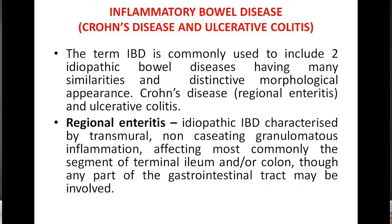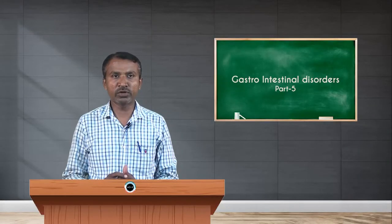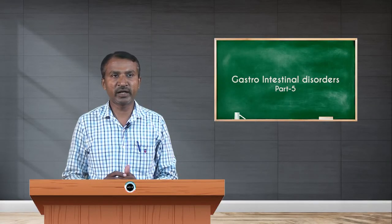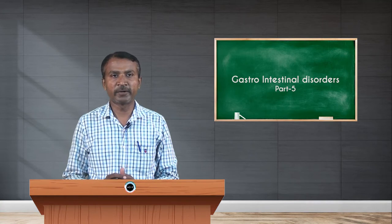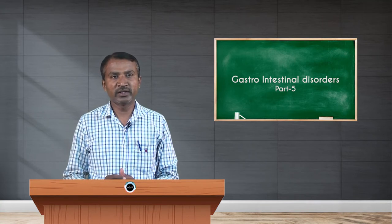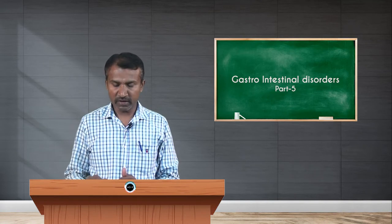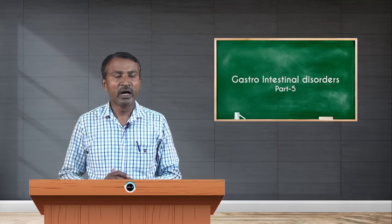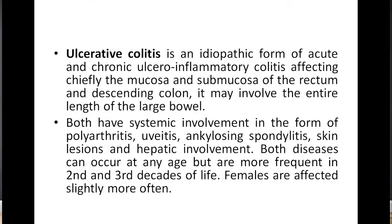Regional enteritis, also called Crohn's disease, is an idiopathic IBD characterized by transmural non-caseating granulomatous inflammation affecting most commonly the segment of terminal ileum or colon, though any part of the gastrointestinal tract may be involved. Ulcerative colitis is an idiopathic form of acute and chronic ulcero-inflammatory colitis affecting chiefly the mucosa and submucosa.